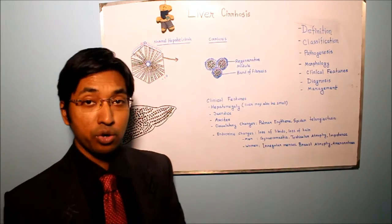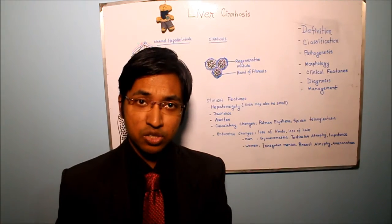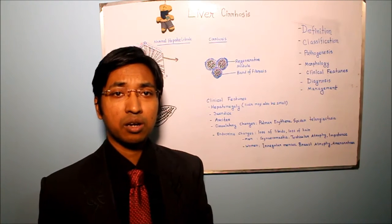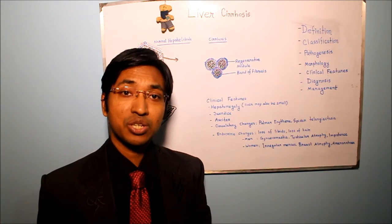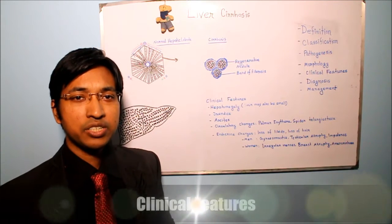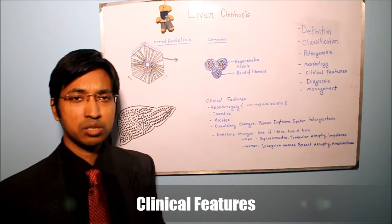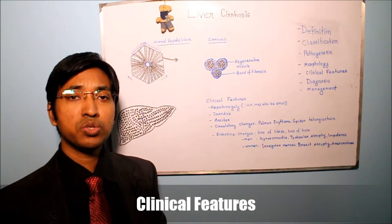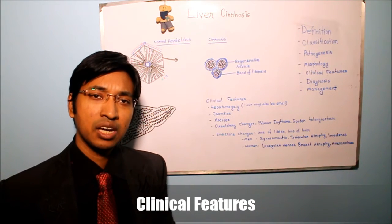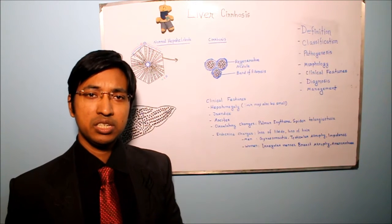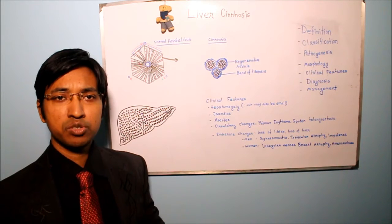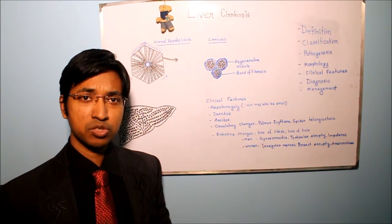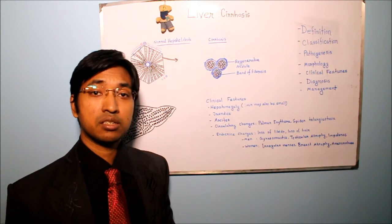So that was in short about the morphology of liver cirrhosis. Now we will move on and talk about the clinical features of liver cirrhosis. Patients of liver cirrhosis may show no symptoms for a long period of time. In 40% of cases, the patients are asymptomatic until the advanced stage of the disease. Even when symptomatic, the symptoms may appear gradually. Sudden or abrupt onset of symptoms may also occur, but that is less common.